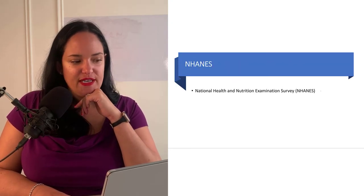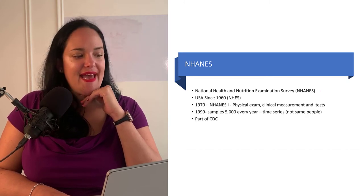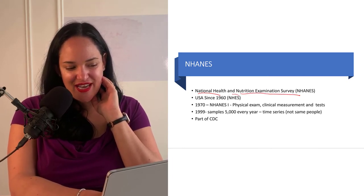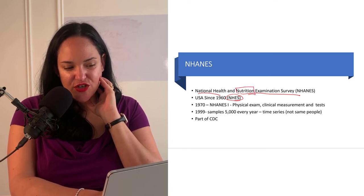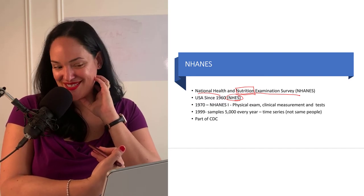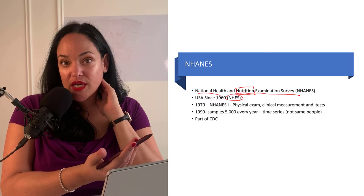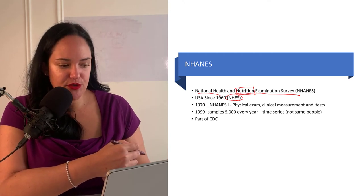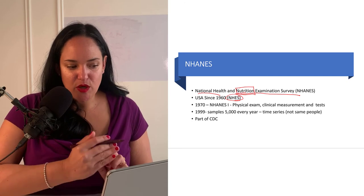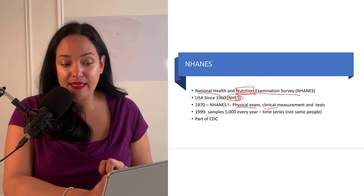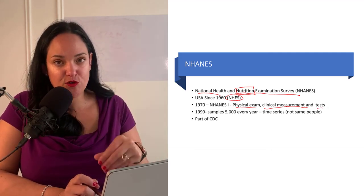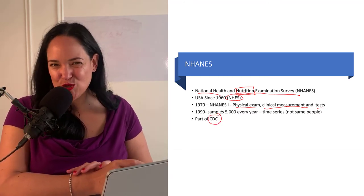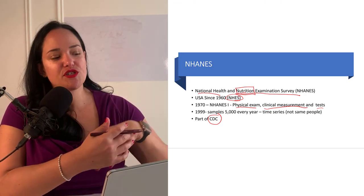The last survey I want to cover is one you'll see a lot when looking at US data — the NHANES, the National Health and Nutrition Examination Survey. It started as the National Health Examination Survey but later incorporated nutritional factors, which is very useful. It's been running since the seventies and involves a physical exam as well as clinical measurements and tests, making it closer to the Canadian Health Measure Survey in that they are actually measuring things. It is administered by the Centers for Disease Control.